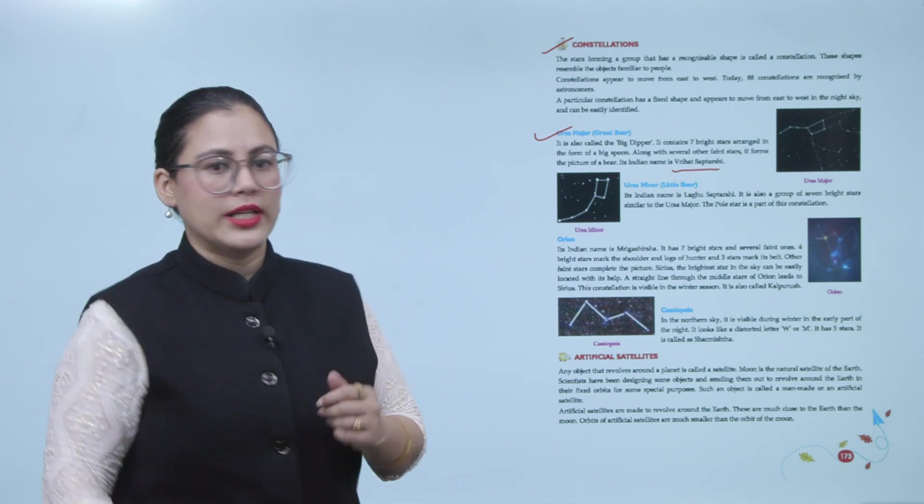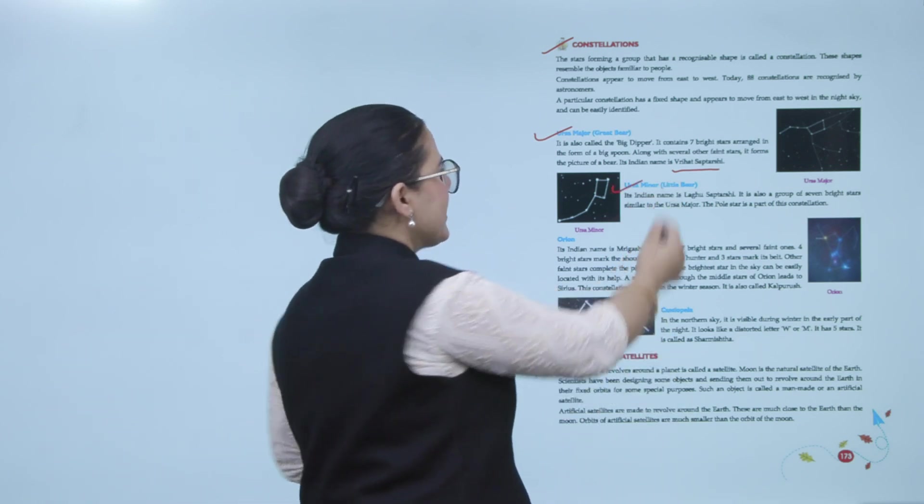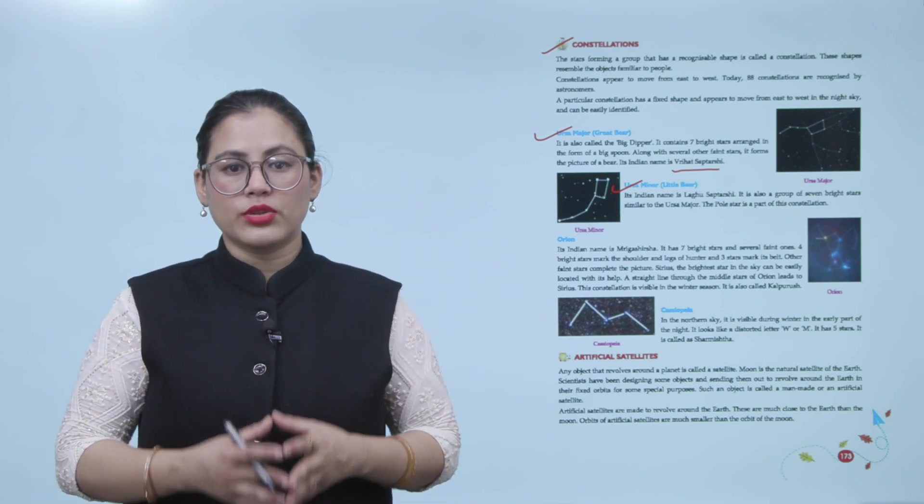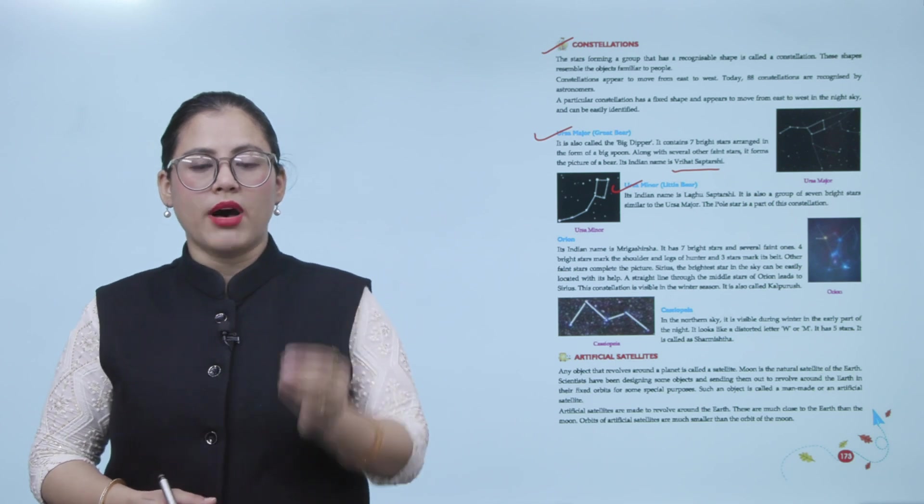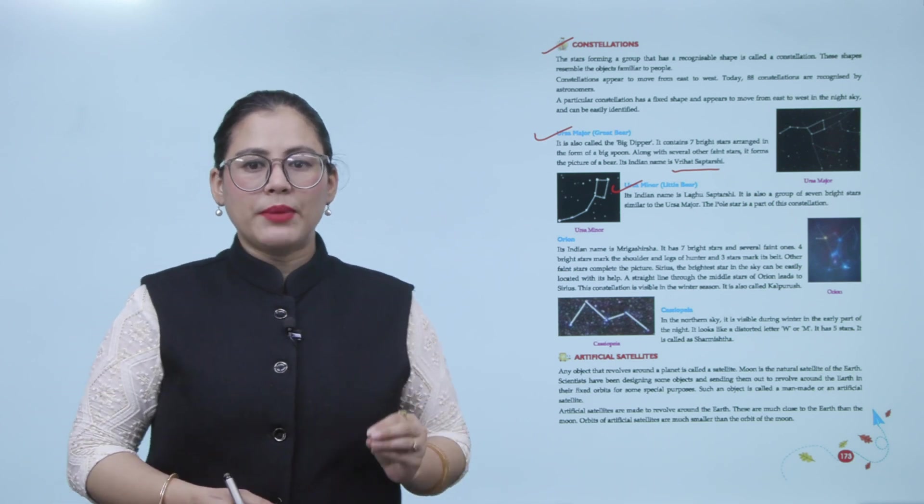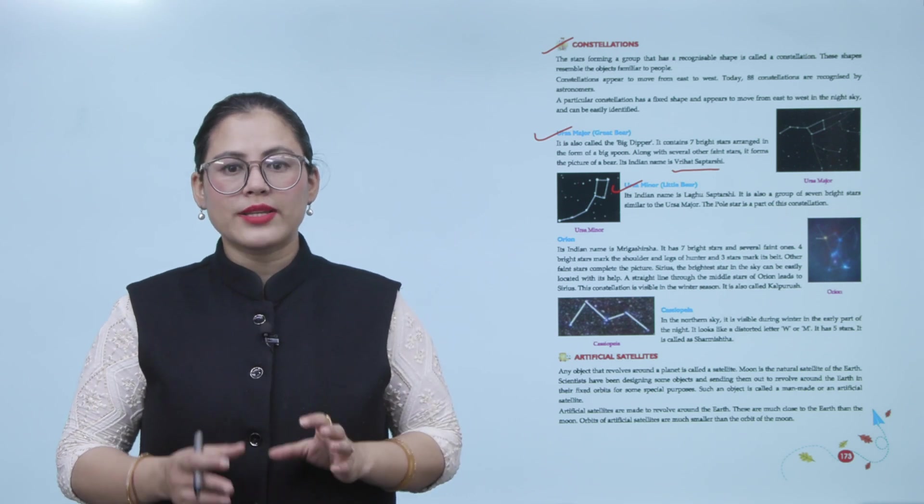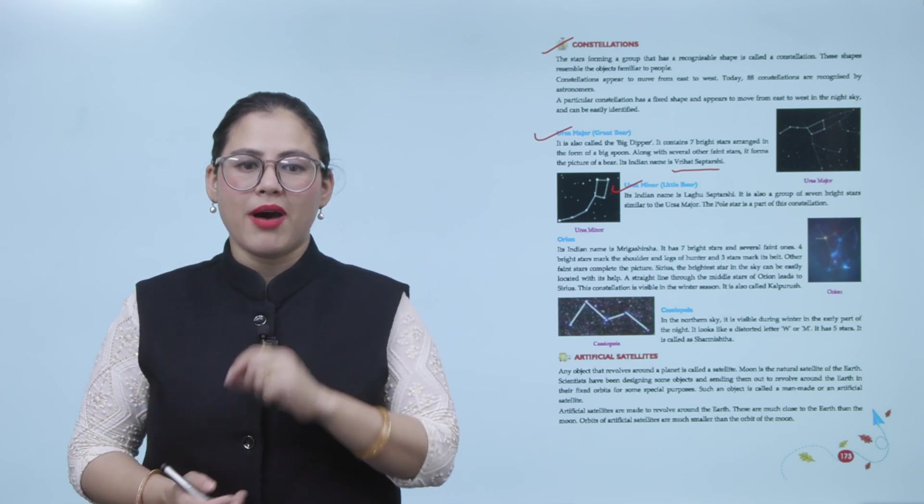Next one is Ursa Minor, or Little Bear. Its Indian name is Laghu Saptarishi. It is also a group of seven brightest stars similar to the Ursa Major. The Pole Star is a part of this constellation.